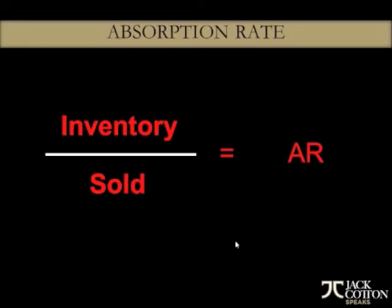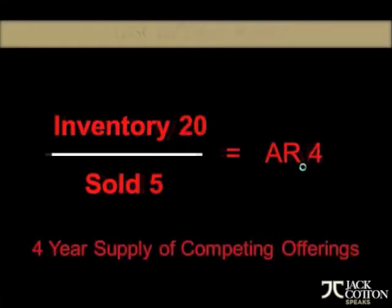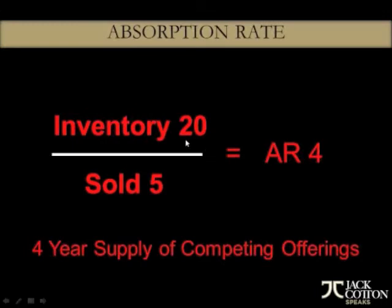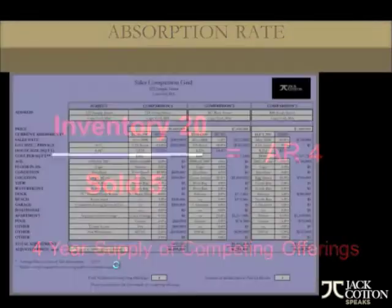We can do the same calculation here by looking at how many homes are currently on the market, how many have sold during the last 12 months — I like to use a year — and that will equal the absorption rate. For example, if there are 20 properties on the market and five have sold in the last year, the absorption rate is four, meaning there's a four-year supply of competing offerings on the market today.